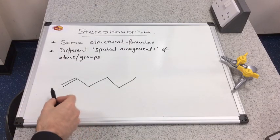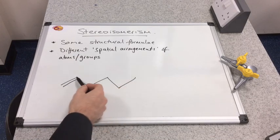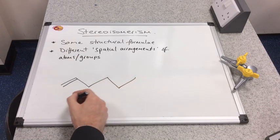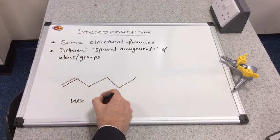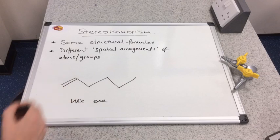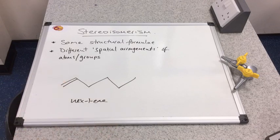One for you. Same sort of format of question. So let's name this. One, two, three, four, five, six. Hex. It's got a double bond. Ene. Where's the double bond? Well it's straight away on the first carbon. Hex-1-ene.